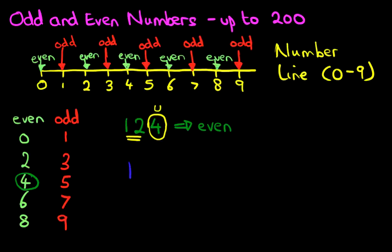Let's have a look at the next example. Suppose this time we've got 137. Now again, we're going to ignore the first two digits. We're just going to concentrate on the last one — the 7. The 7 is the units. The 1 and the 3 could be any numbers. Just look at the 7. Can you find the 7 in either of the columns on the left? Have you found it? That's right — 7 is over here, and 7 is an odd number. If 7 is an odd number, then the number 137 is also an odd number.